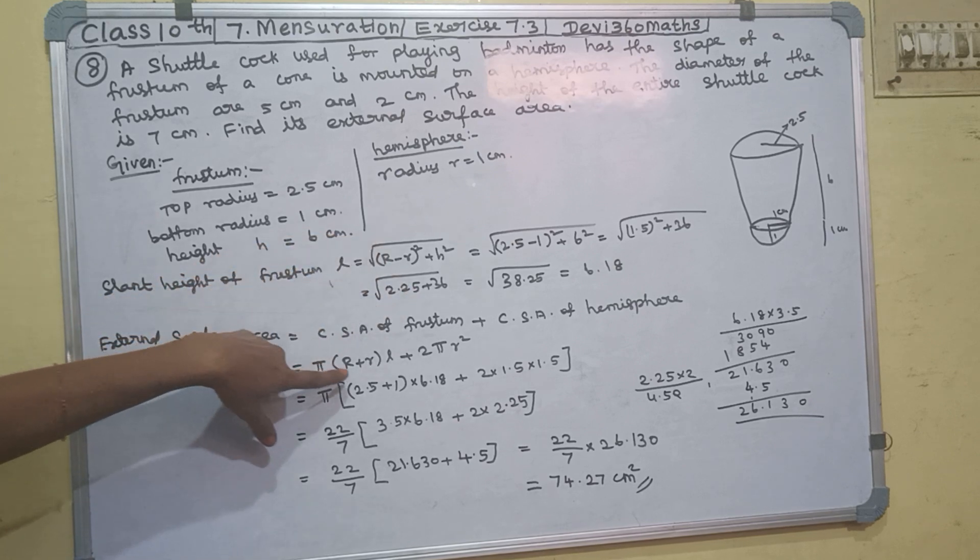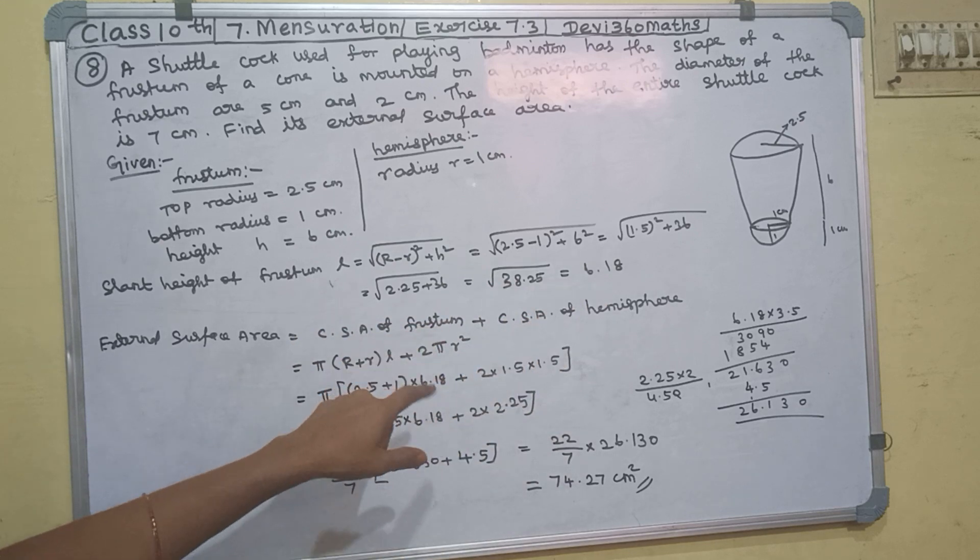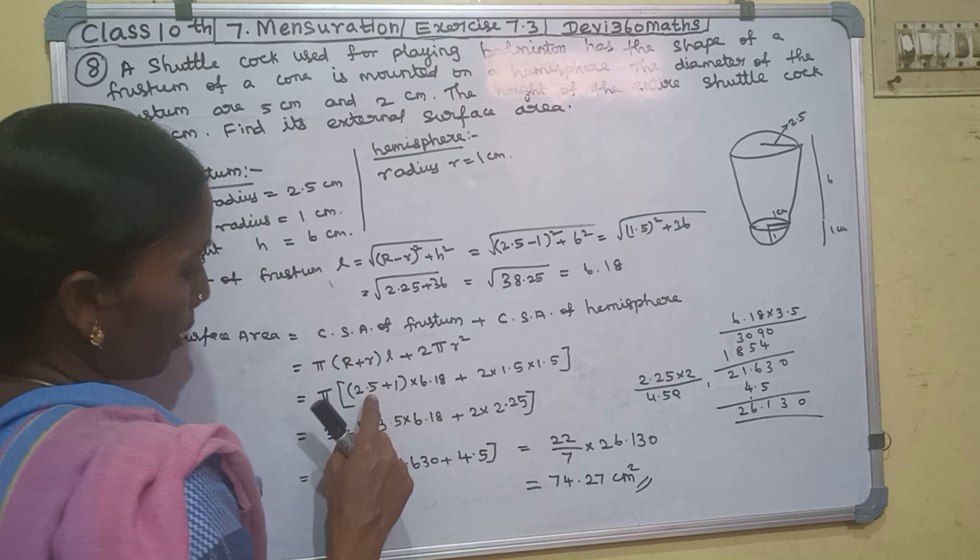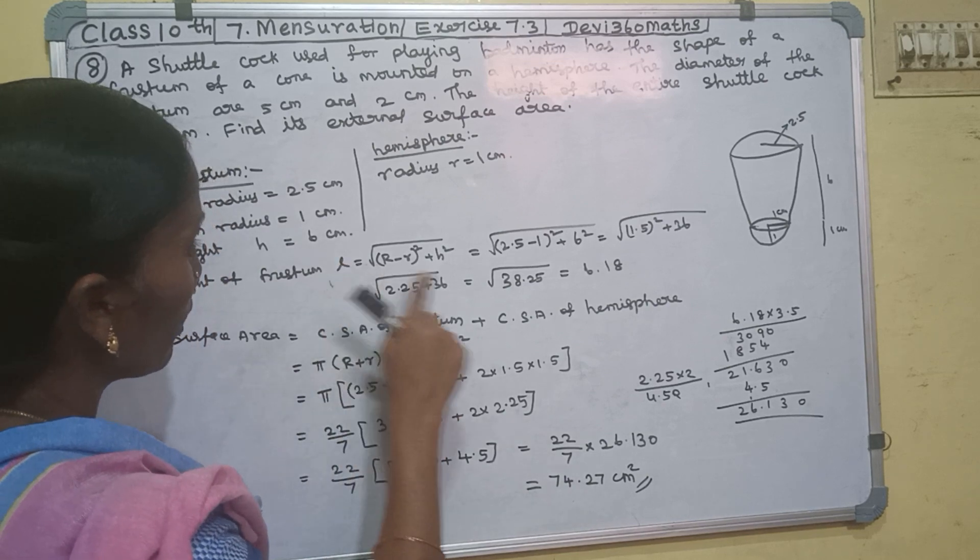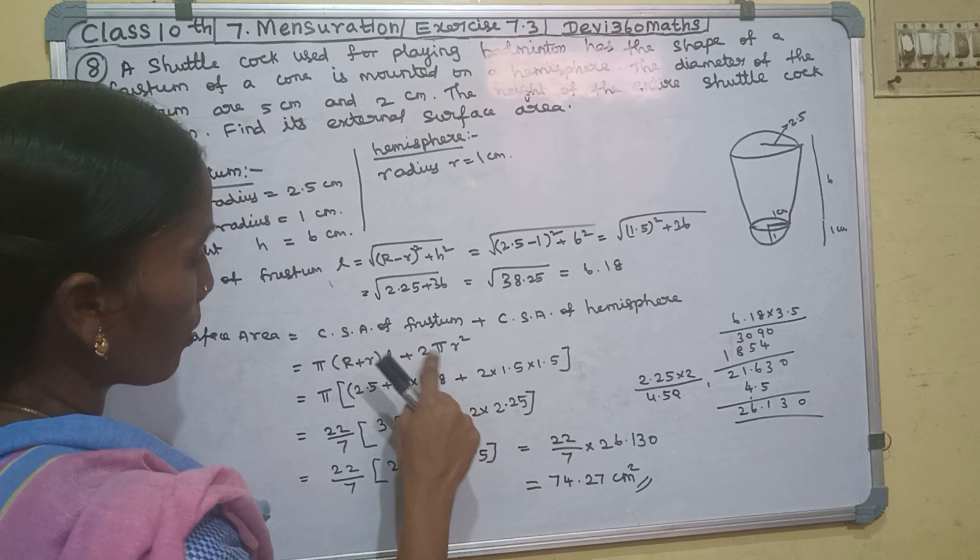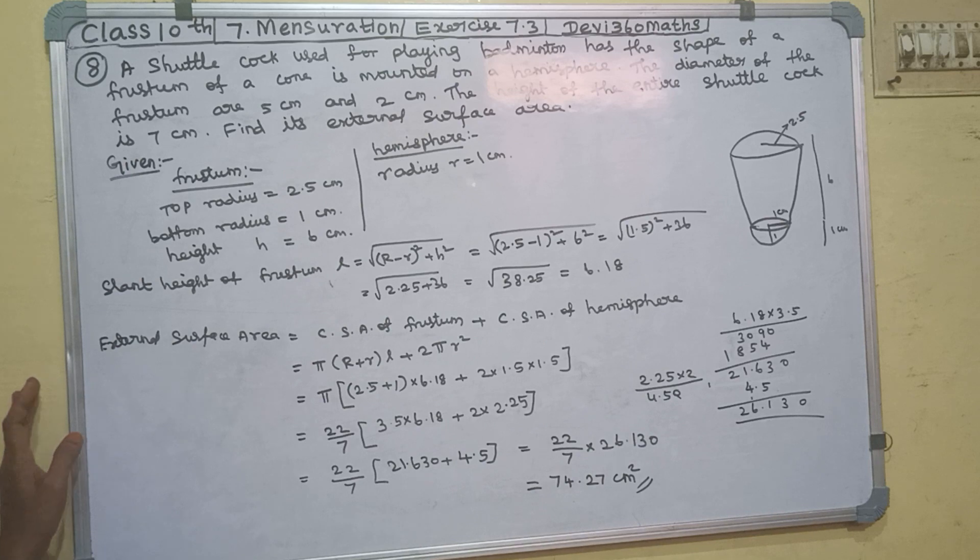The frustum curved surface area is π(R + r)L. Plus the hemisphere curved surface area is 2πr². So π times (2.5 + 1) times 6.18 plus 2πr². The hemisphere radius is 1.